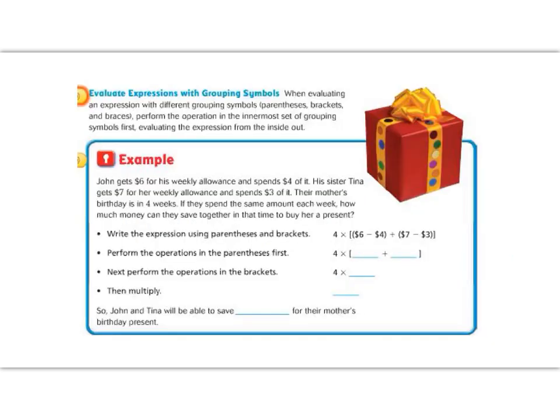Let's practice this again. John gets $6 for his weekly allowance, and he spends $4 of it. His sister Tina gets $7 for her allowance, and she spends $3 of it. Their mother's birthday is in 4 weeks. If they spend the same amount each week, how much money can they save together in that time so that they can buy her a present?